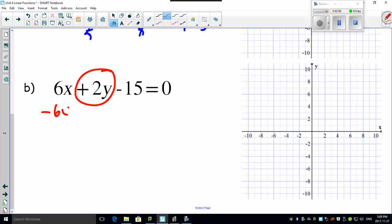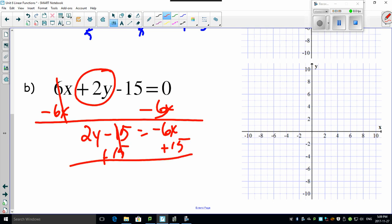Get rid of this guy. Minus the 6x from both sides. That cancels, leaving you 2y minus 15 equals minus 6x. Then add the 15 to both sides. That cancels this guy out, leaving you 2y equals minus 6x plus 15.